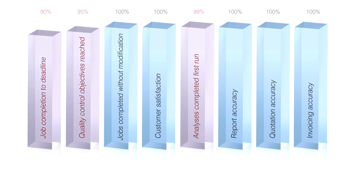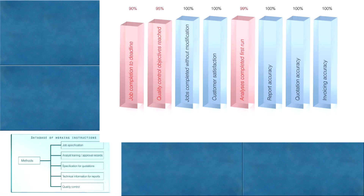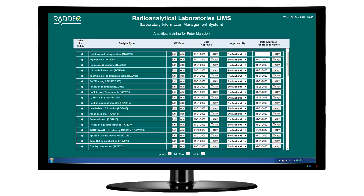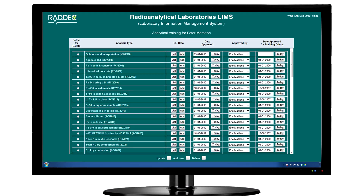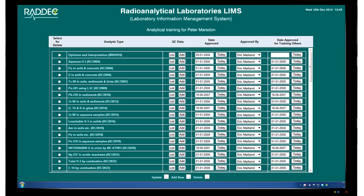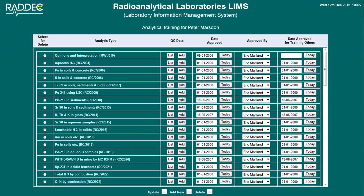Data entered at key stages during the job are collated and used to assess overall laboratory performance, which can be compared against defined quality objectives. RADEC LIMS incorporates analyst training records and approvals, and by linking with the job specification will only allow analysts approved to perform a specified method to enter information into jobs.